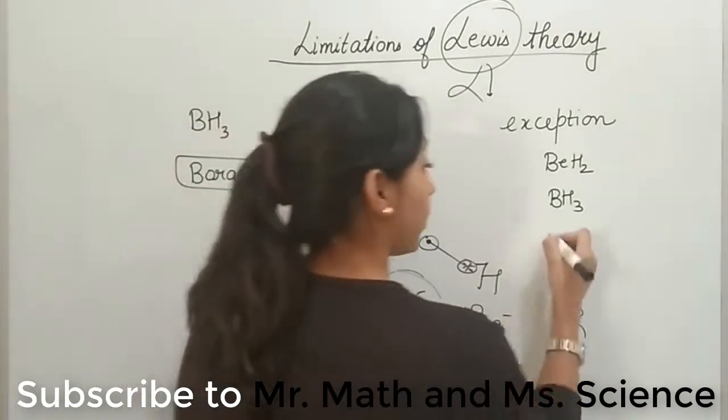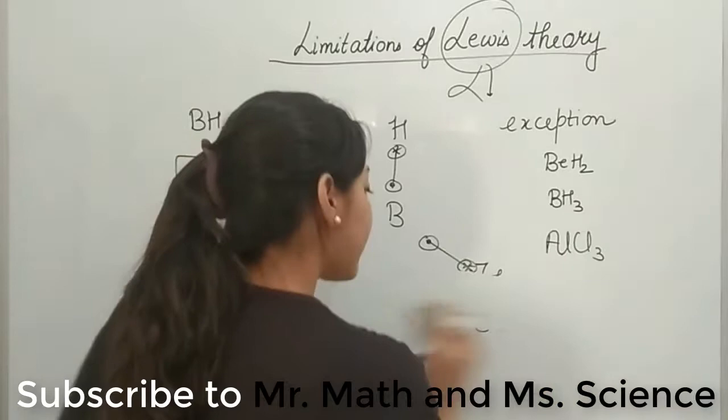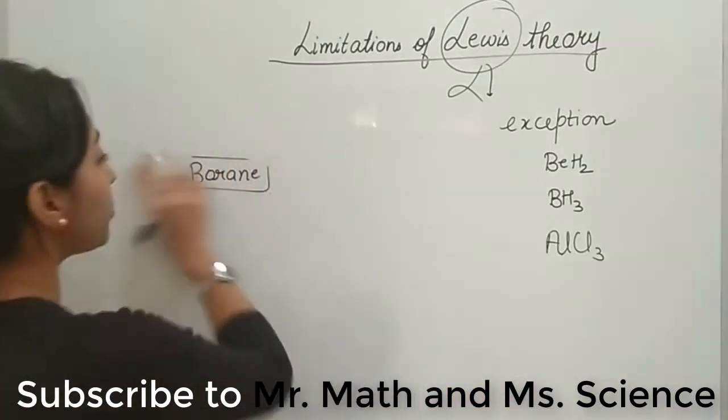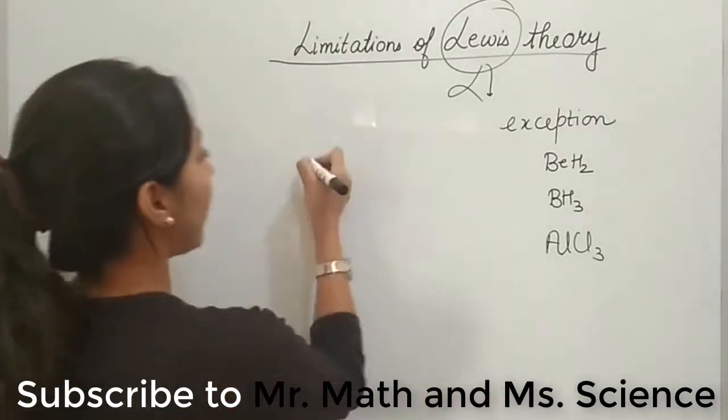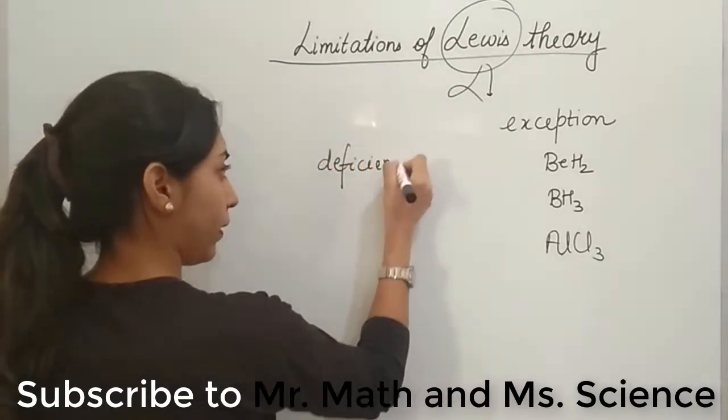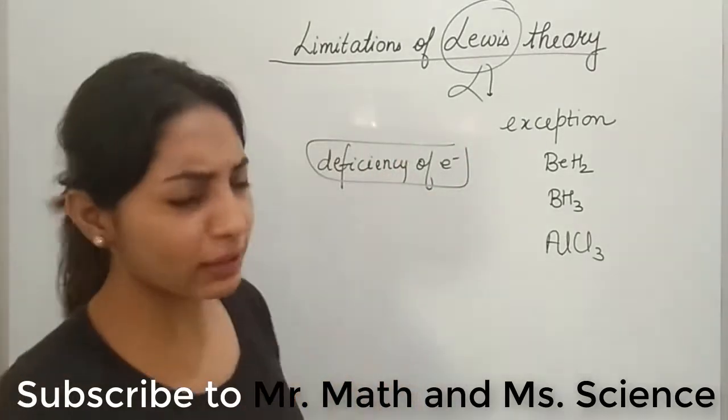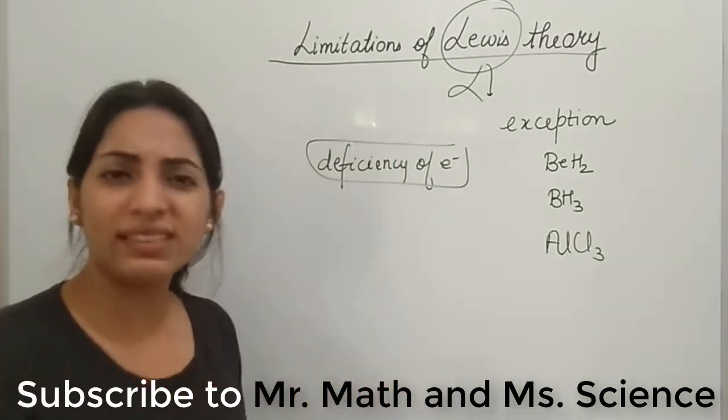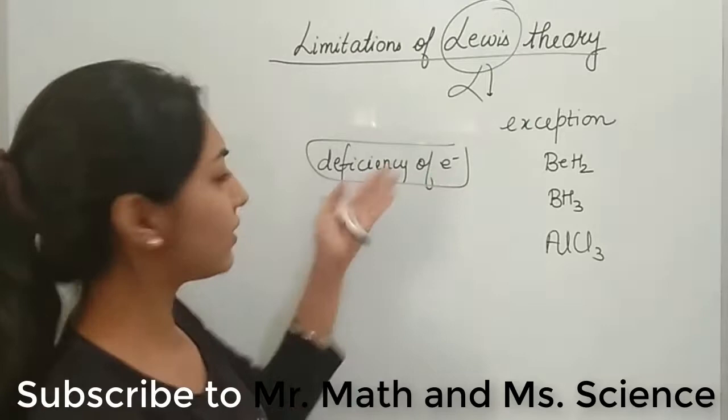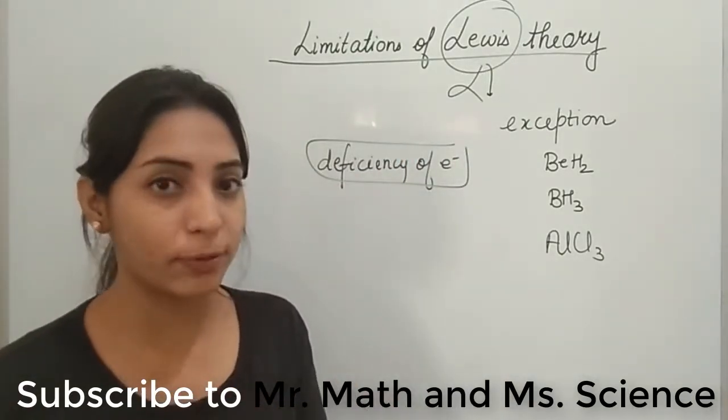So he said that there are certain molecules which would be exceptions which have deficiency of electrons. We were still okay that maybe in his theory some of the other points are wrong which is deficiency of electron might be some examples. We were still okay with his approach at this point.